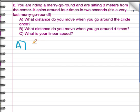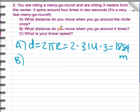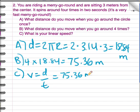The distance you move is the circumference of the circle, or 2 pi r. 2 times 3.14 times the radius, which is 3, equals 18.84 meters. When you go around 4 times, you just multiply this by 4, which is 75.36 meters. To figure out your speed, you use the formula speed equals distance divided by time, or 75.36 meters divided by 2 seconds, giving 37.68 meters per second.